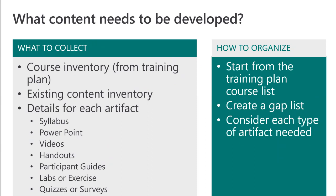You'll likely need a variety of different artifacts. The likelihood that a particular course will only need one PowerPoint or one handout is unlikely. You'll need to consider the format of the course when creating your gap list. For example, if you're planning to do self-paced learning but all you have are PowerPoints and Word documents, you'll need to create videos to go along with that — because you likely don't want just straight text in a self-paced course. If a course needs a syllabus, a PowerPoint, and a handout, then in your content development plan you'll have three rows.